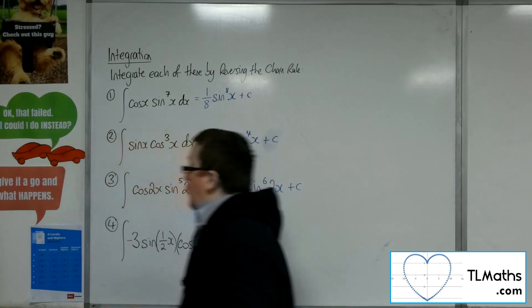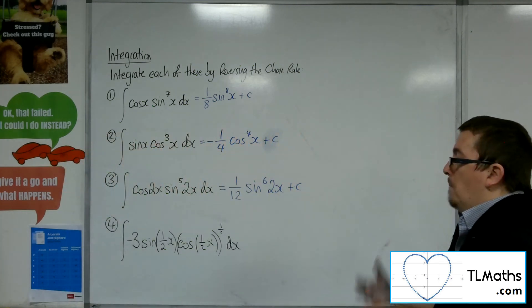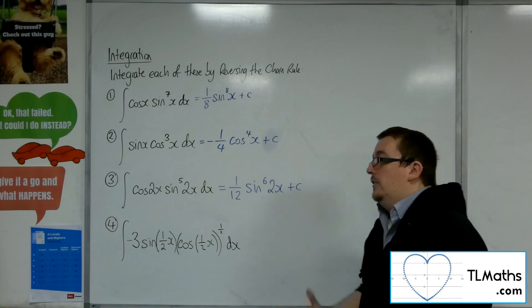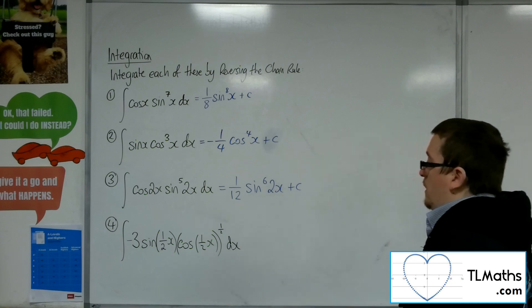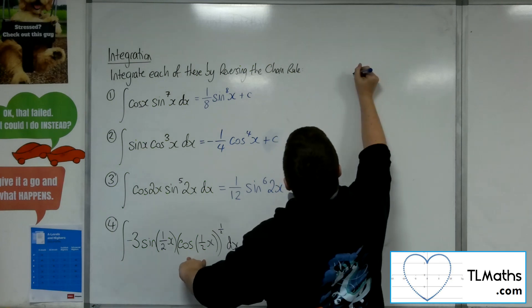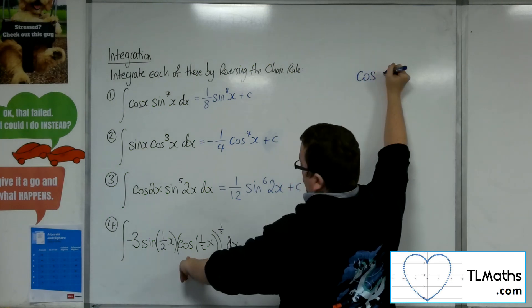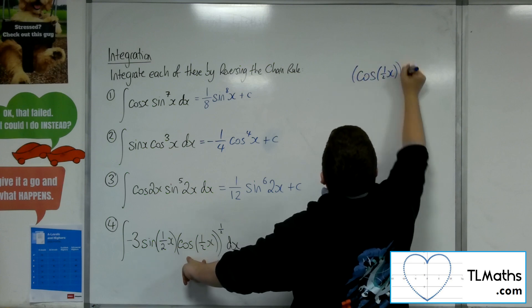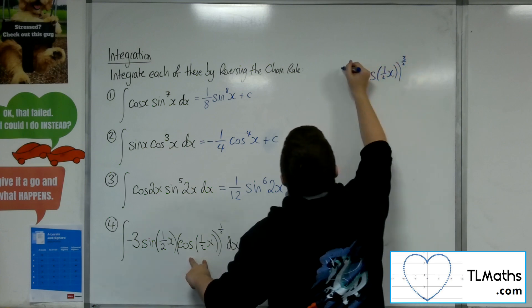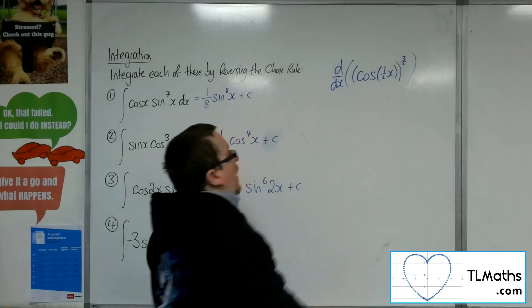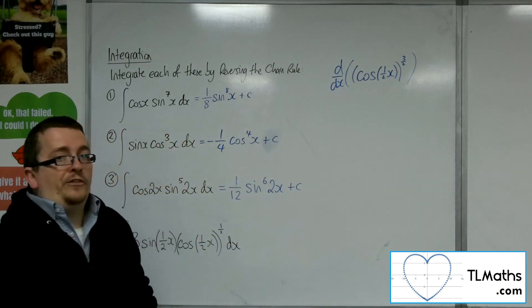All right, last one, number 4. We've got minus 3 sine of a half x times cos of a half x square rooted. So I would expect to get cosine of a half x to the 3 halves. And I'm going to differentiate that because that's 1 added to the power. So let's see what we get.